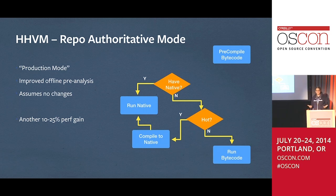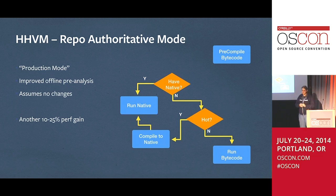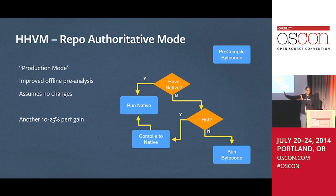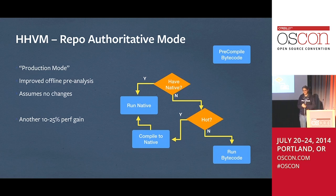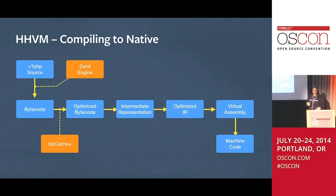We also have repo authoritative mode. Instead of obsessively checking if files have changed on every request, it assumes files haven't changed and goes straight to the JIT-compiled machine code cache, skipping many steps. This makes sense if you're deploying to servers on a weekly basis rather than editing files live. APC has something similar called 'no stat' — this just takes that to the nth degree.